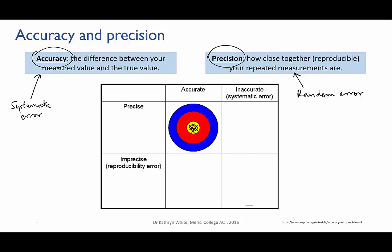The classic analogy here is of arrows in a target. The first target shows an archer with high accuracy and high precision, or in other words, low systematic error and low random error. The shots are clustered together, like measurements that are very close to one another, and they cluster right on the bullseye, which you could think of as the true value of the measurement.